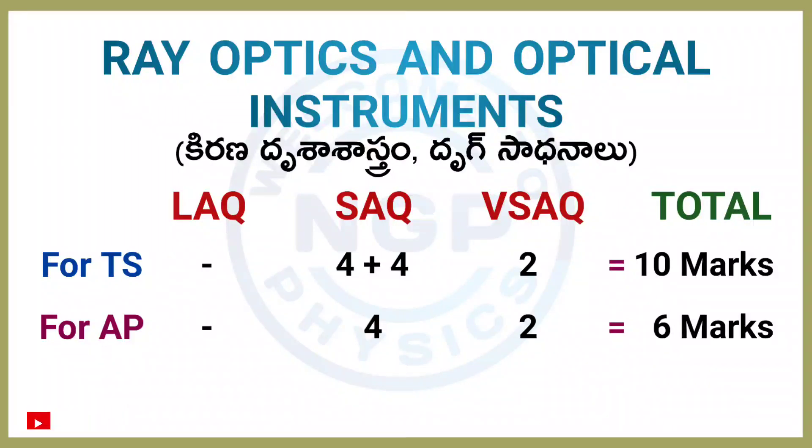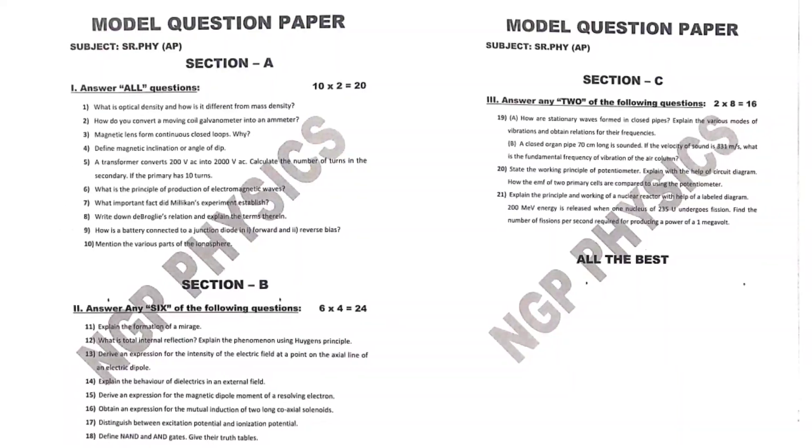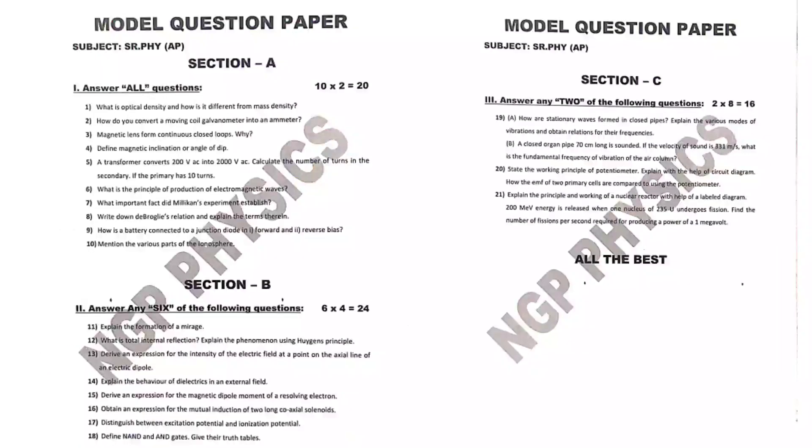For AP students, total chapter weightage is 6 marks.